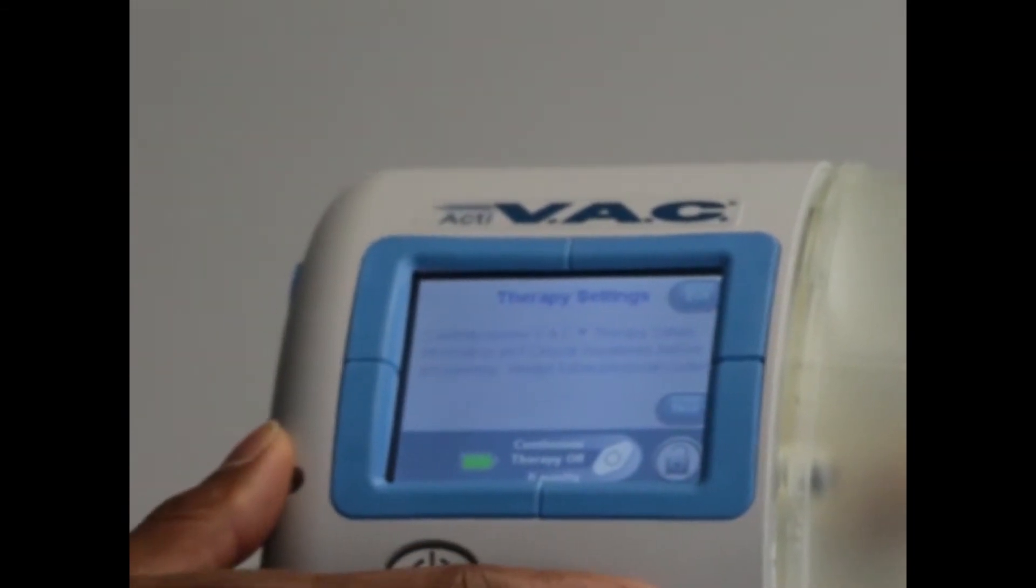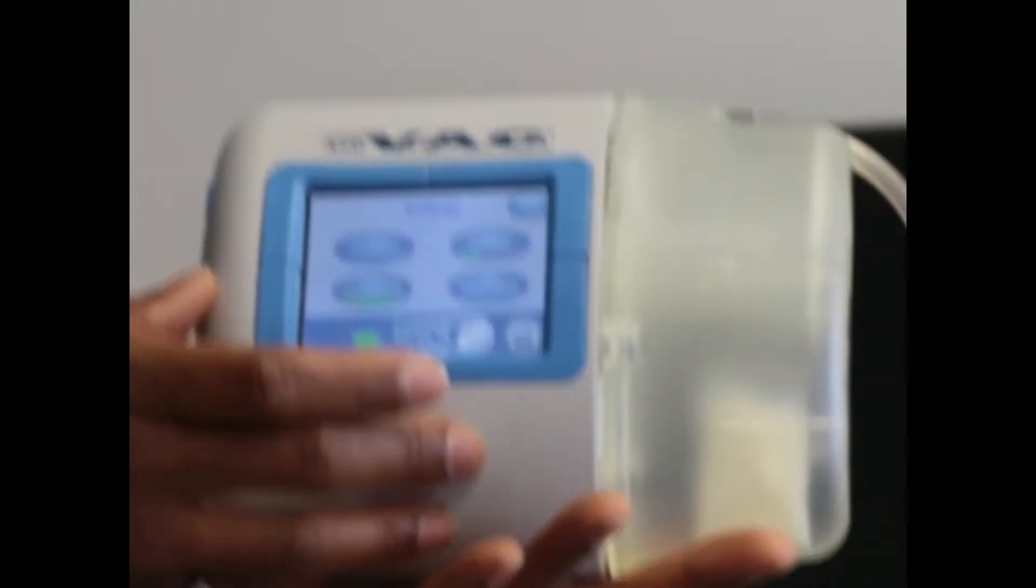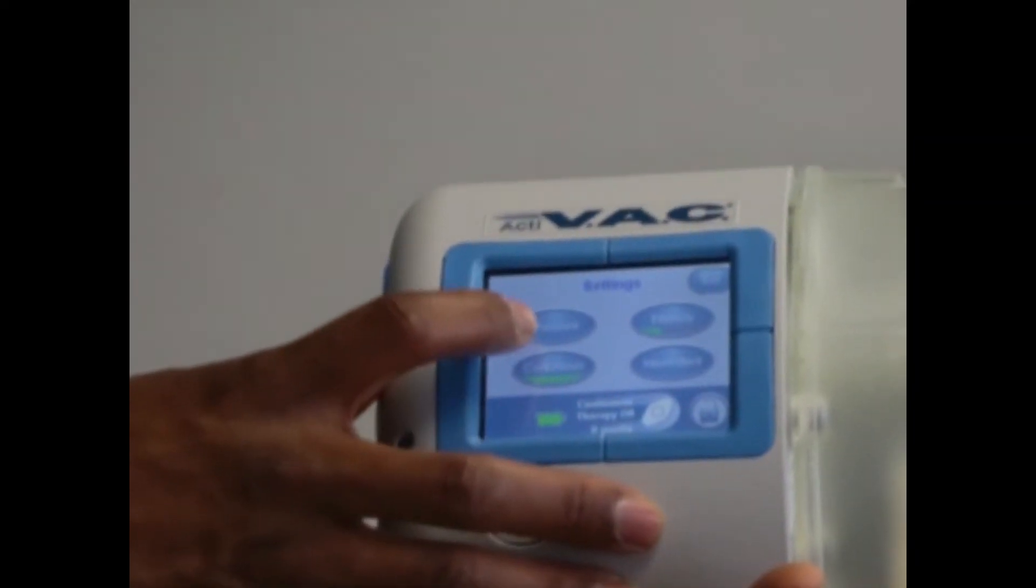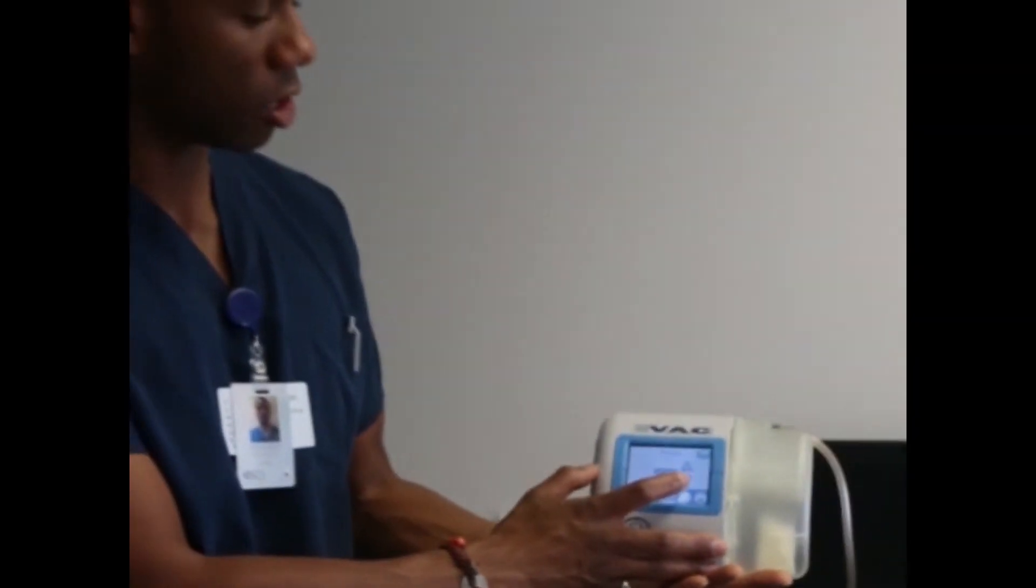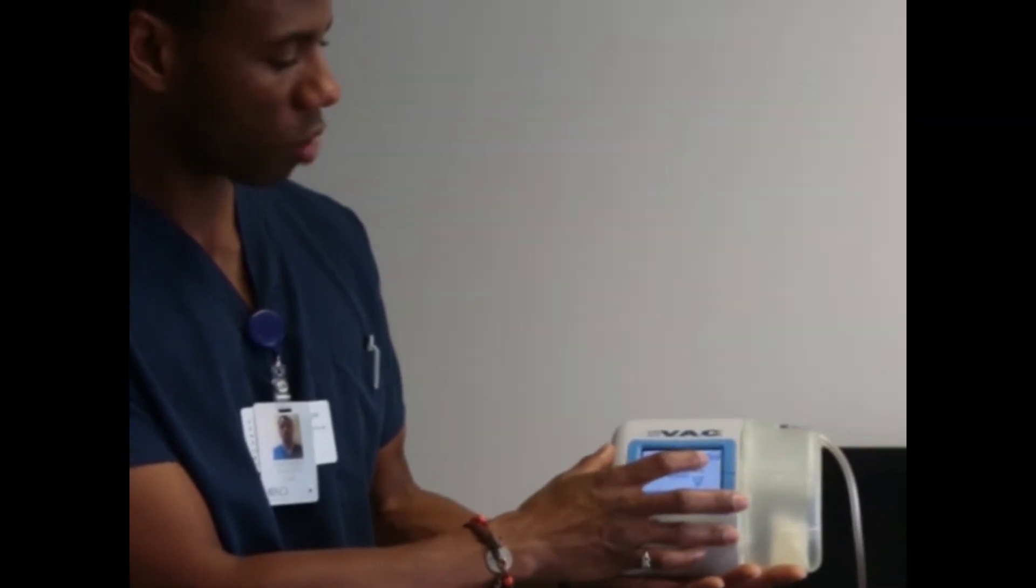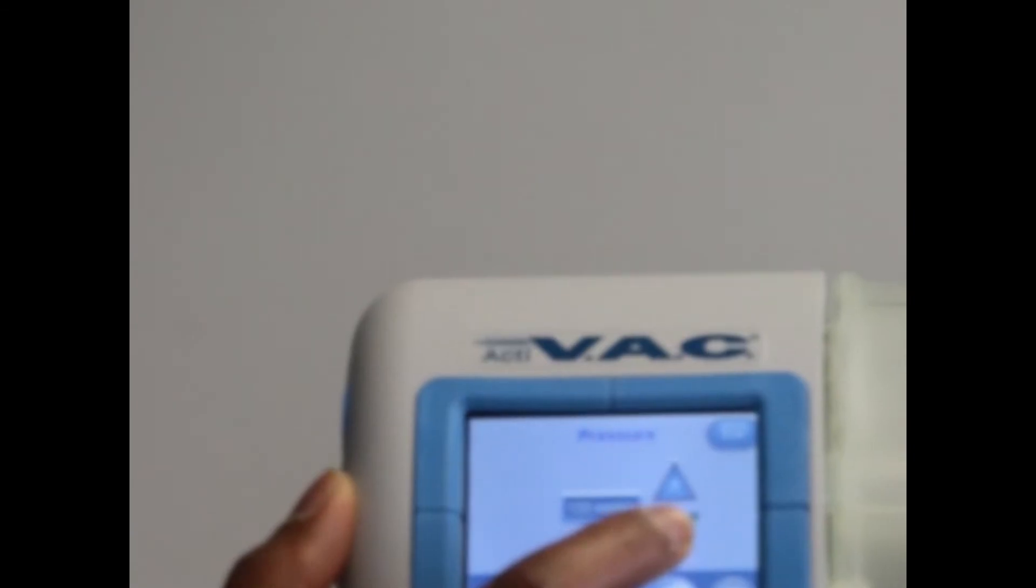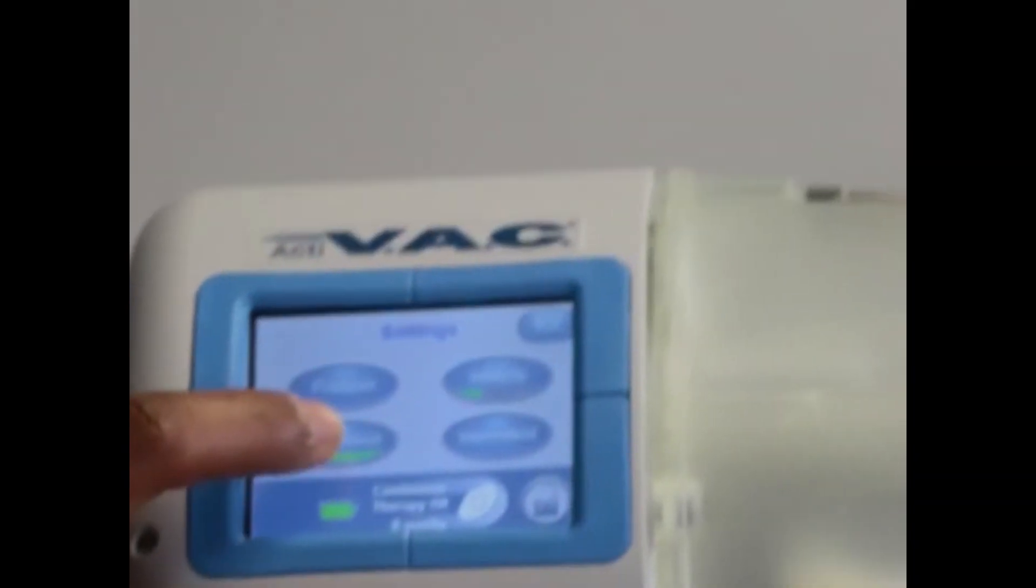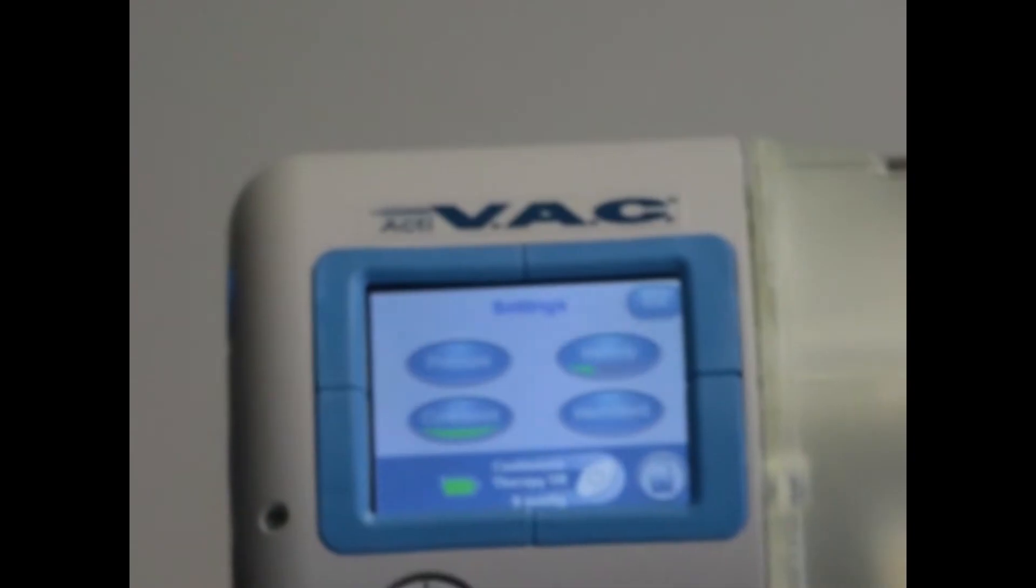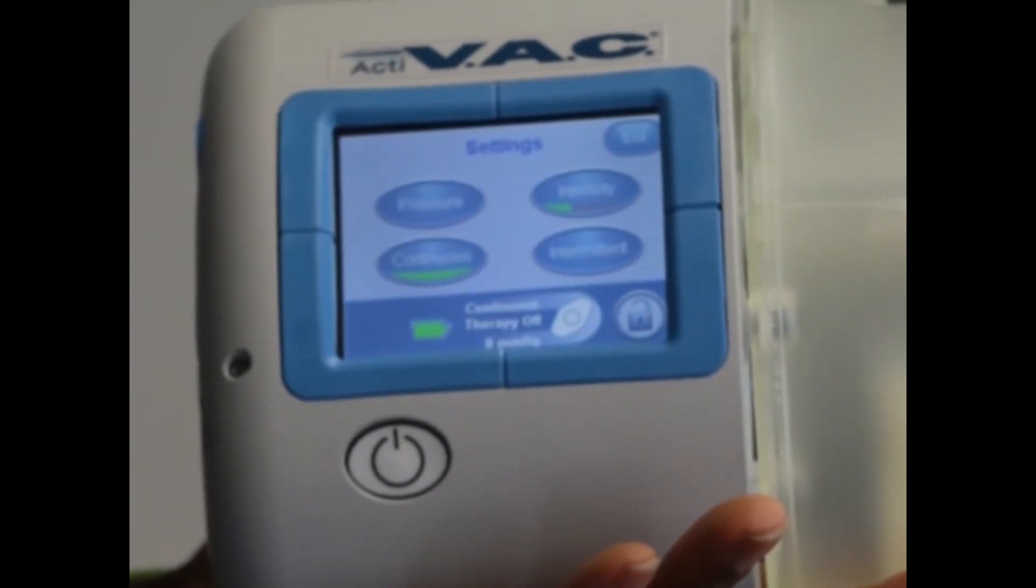Exit out of that. And then the main thing is going to be in your therapy settings. So it just gives you some information. You can click next. Settings is where you can adjust your pressure. So this is probably one of the main areas you're going to go to, depending on what the physician has prescribed for the patient. 125 is the normal or basic that most are prescribed at. It goes up to 200. And you just use the up and down, plus and minus click arrows, all the way down to 25 millimeters of mercury for pressure. So we'll leave it at 125. It connects it out.